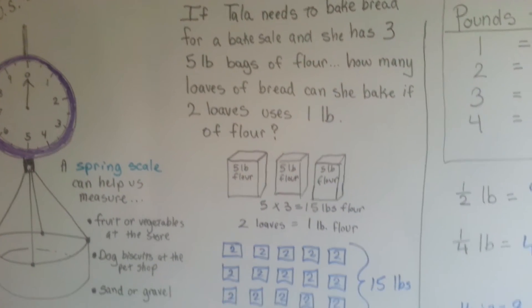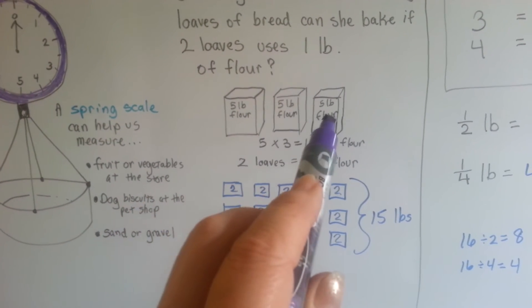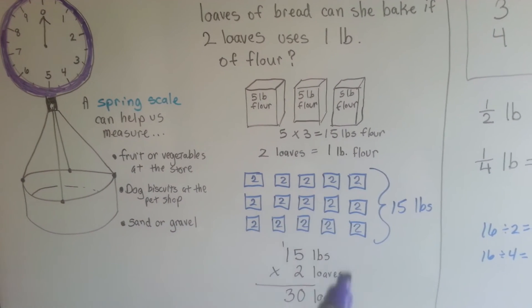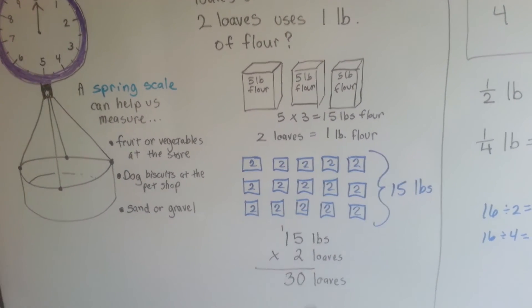Each one of these was five. She had three of them. One pound makes two loaves. She has fifteen pounds. Fifteen times two is thirty.